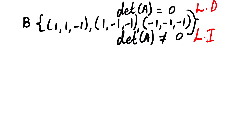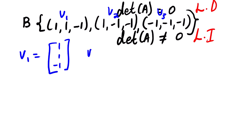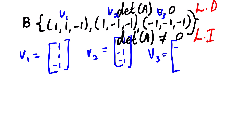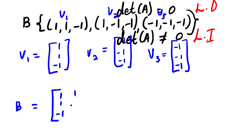Let us use the determinant method to check whether these vectors are linearly dependent or linearly independent. We have v1, v2, v3. v1 equals (1, 1, -1), v2 equals (1, -1, -1), v3 equals (-1, -1, -1). The matrix B is formed from these vectors: [1, 1, -1 / 1, -1, -1 / -1, -1, -1].